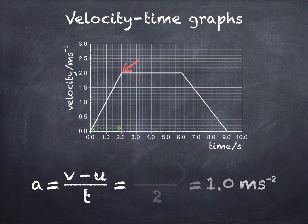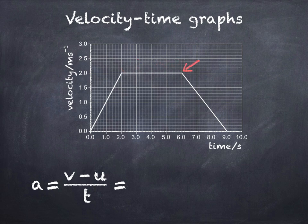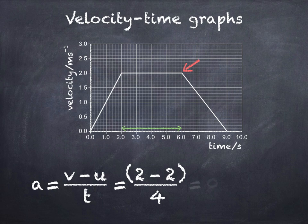we get an acceleration of 1 meter per second per second for the first two seconds. For the second section, initial velocity u is 2 meters per second, as is final velocity v. t is 4 seconds — that's from 2 to 6 seconds on the x-axis. Substituting into the equation, we get an acceleration of 0 meters per second per second for the second section of the graph.